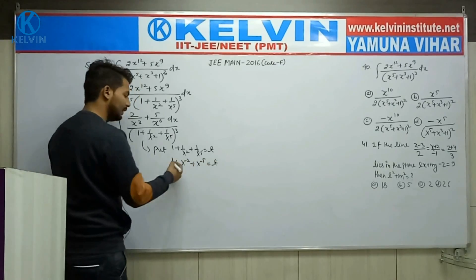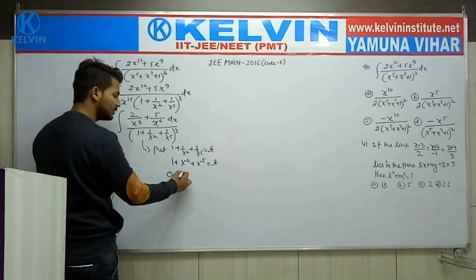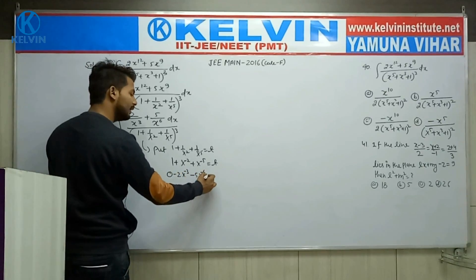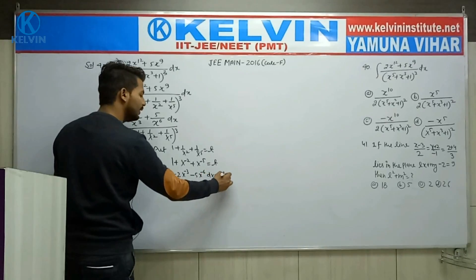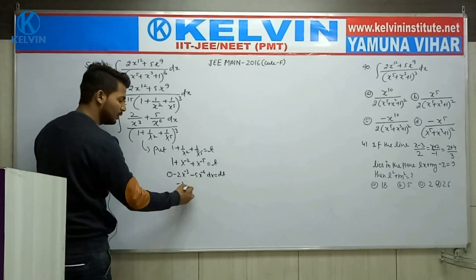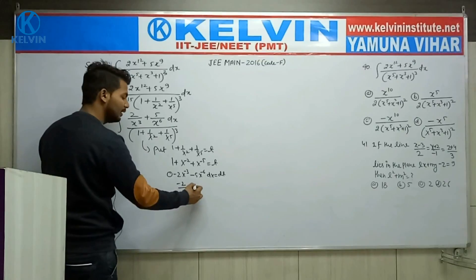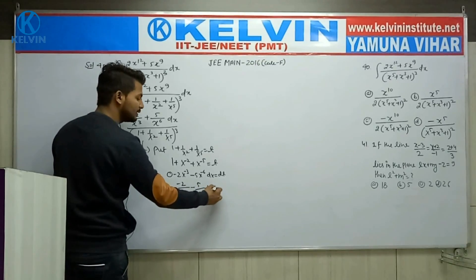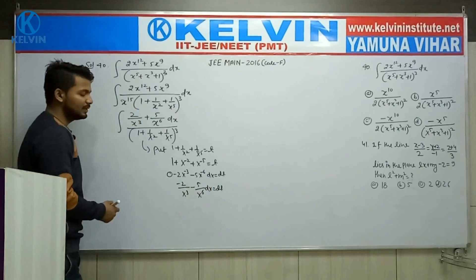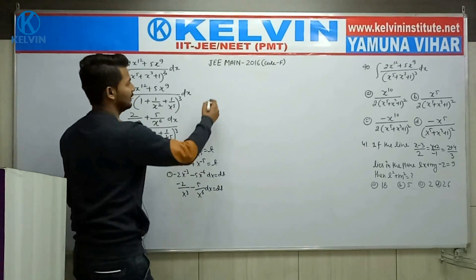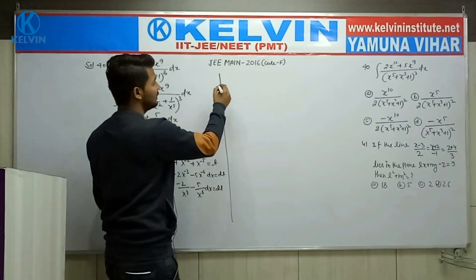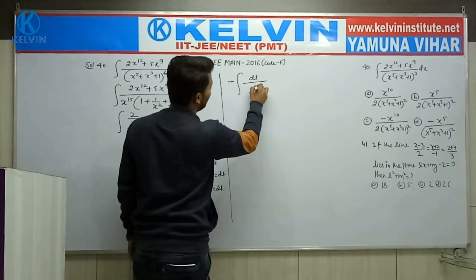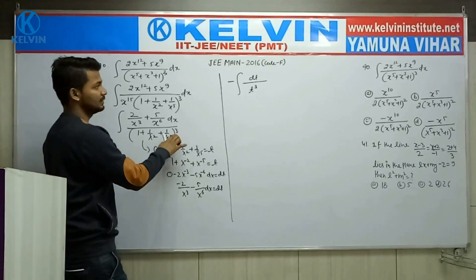Equal to t. Derivative: x to the power minus 3, minus 5, x to the power minus 6, dx is equal to dt. Finally, this is 2 upon x to the power 3 and minus 5 upon x to the power 6, dx is equal to dt. Here, minus common lesser power, this time you can write it.